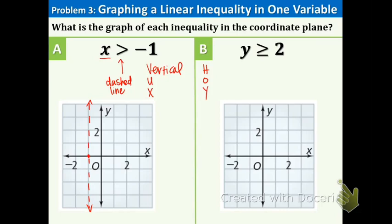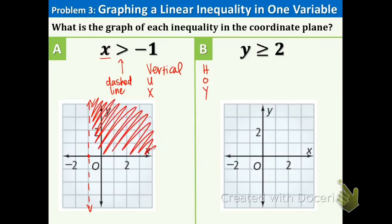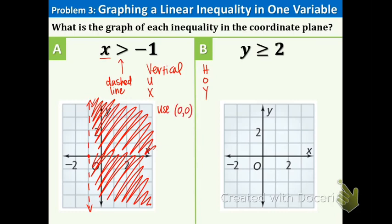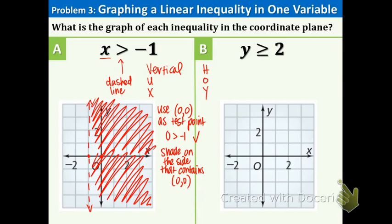Now we need to figure out where to shade. A shortcut: when x is on the left side, the symbol points toward where you're shading. The greater than symbol points right, so shade right. The mathematical way is to use a test point — typically (0, 0) is a convenient choice. Plug 0 in for x: is 0 > −1? Yes. So shade on the side that contains (0, 0), which is the origin. That completes part a.